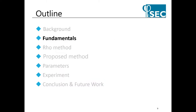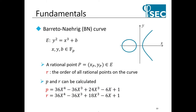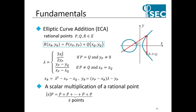Next, I will explain the fundamentals required for this research. As the rho method is applied to the BN curve, which is one of the elliptic curves, the BN curve will be described. The curve equation of the BN curve is given like this. The prime p and the order r are given by the formula. An operation that adds two rational points is called elliptic curve addition and can be calculated using this equation. An operation that adds s rational points is called scalar multiplication and it is expressed like this.